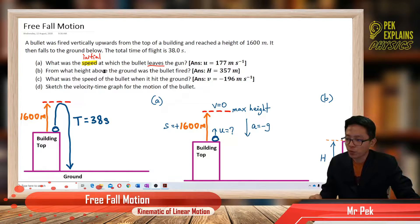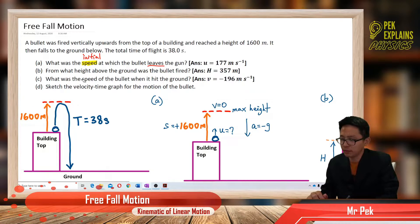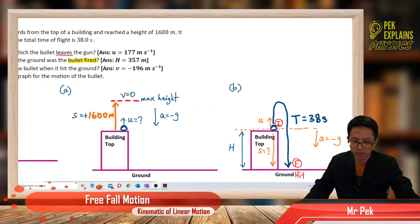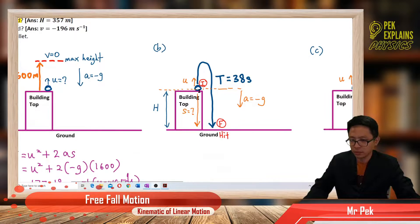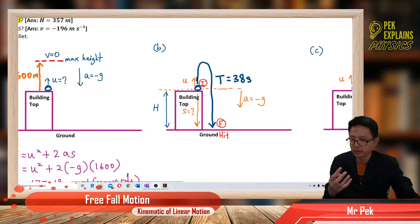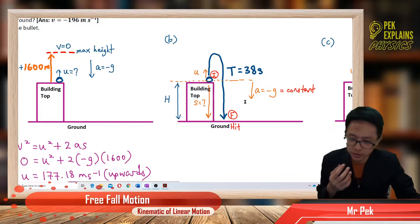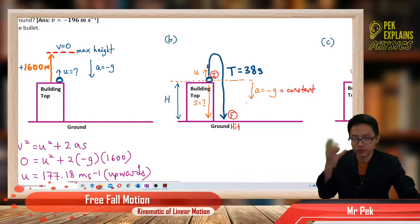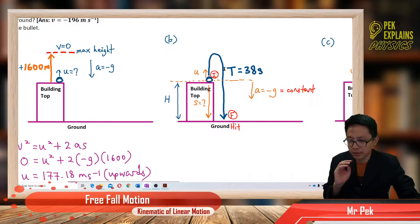Part B: from what height above the ground was the bullet fired? This question asks about the height where the bullet was fired. The bullet is fired from the building top, so the height where the bullet was fired from the ground is actually the height of the building.